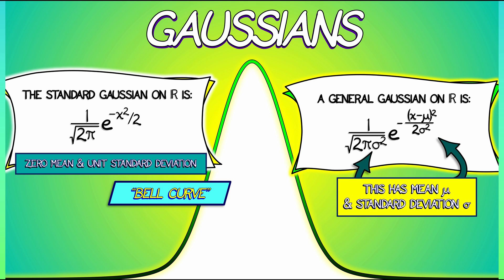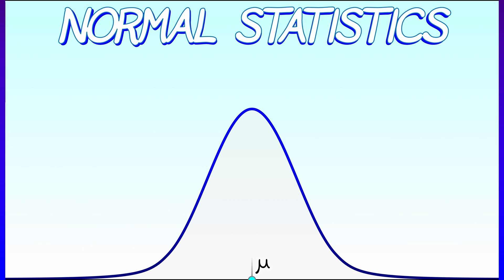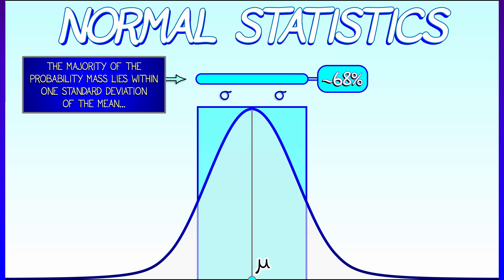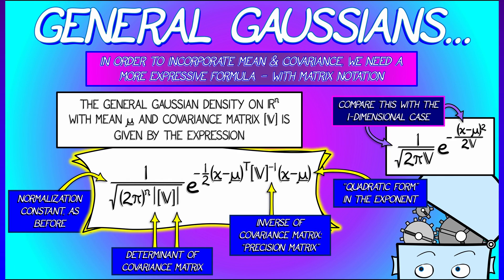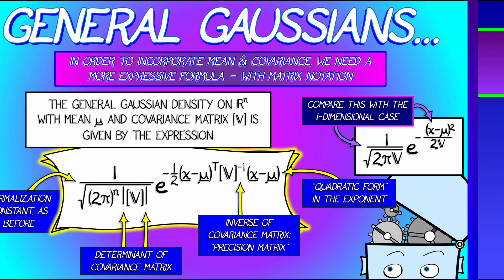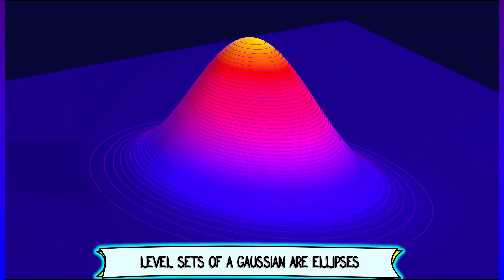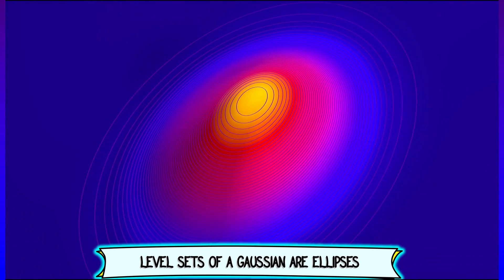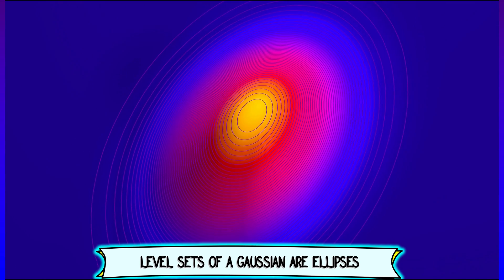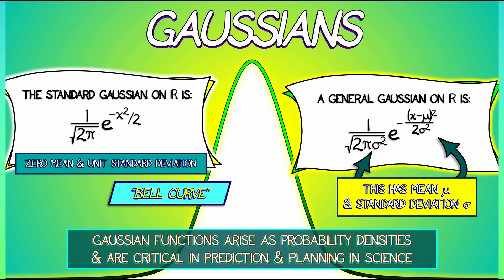Now, as you might guess by the language I'm using, this comes from probability. These Gaussians arise as probability densities and are absolutely vital when talking about probability and its applications in prediction, in planning, all over science. Boy, do you need Gaussians. We're going to see these guys later, especially when we do multivariable calculus. But for now, I want you to have at least seen these functions and see that they depend on the exponentials.